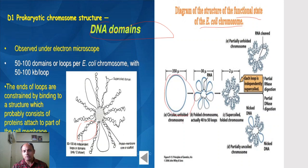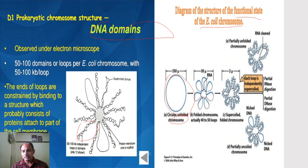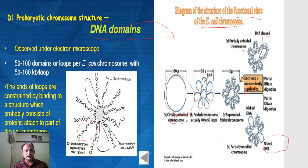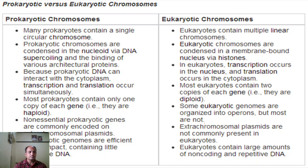The first diagram shows the circular unfolded chromosome — a single double-stranded circular DNA molecule. The second diagram shows the folded structure having 40 to 50 loops. The folded structure then gets supercoiled to form a more complex structure where each loop is independently supercoiled. Partial RNA digestion results in a partially unfolded chromosome, and partial DNA digestion results in a partially uncoiled chromosome with nicked DNA.